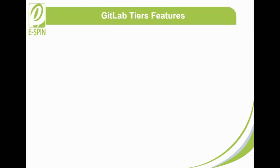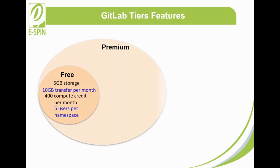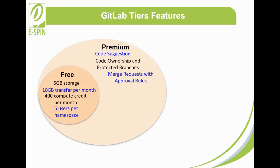Now let's look at the features in the three tiers. GitLab Free includes 5GB storage, 10GB transfer per month, 400 compute credits per month, and 5 users per namespace. GitLab Premium provides all features in GitLab Free plus new features including code suggestions, code ownership and protected branches.